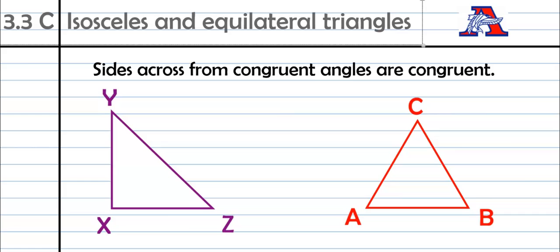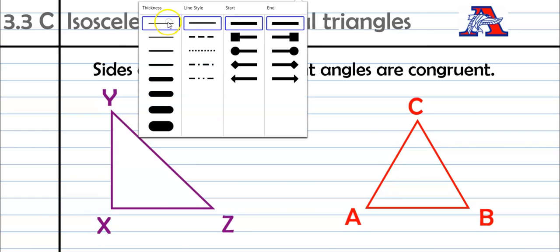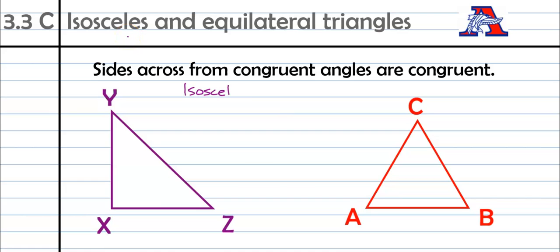First thing we need to talk about is that sides across from congruent angles are congruent. So I have two different triangles here. One of them is an isosceles triangle. This triangle XYZ is an isosceles triangle. An isosceles triangle has those two congruent legs. So all we know for sure is that this side and this side are congruent. But with this new information here is that we have congruent angles across from each of these. So across from this side, we have this angle Y. It has to be congruent to this angle Z. So isosceles triangles not only have two congruent sides, they also have two congruent angles, and that's going to be important.